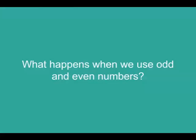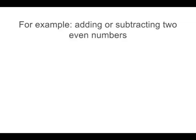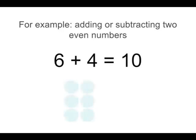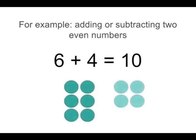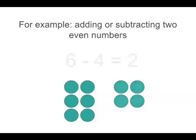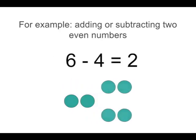Now let's look at what happens when we use odd and even numbers. Let's start by looking at when we add or subtract two even numbers. Take for example 6 plus 4 equals 10. You can see because both 6 and 4 have even pairs, the answer will also have even pairs. And if we subtract them, because we start with even pairs and we take away even pairs, we will always get an even answer. So when we add or subtract two even numbers, our answer will always be even.